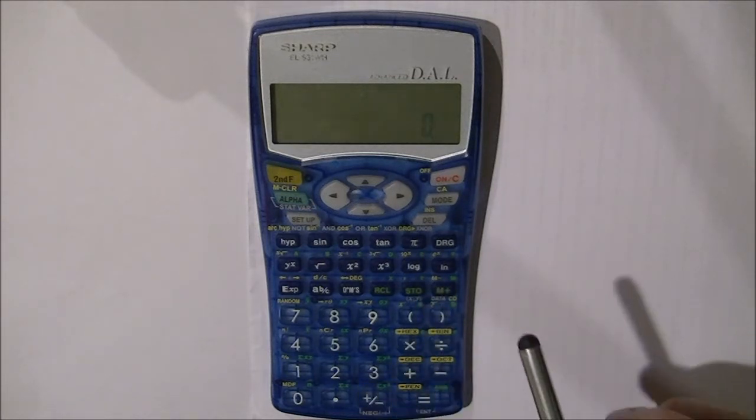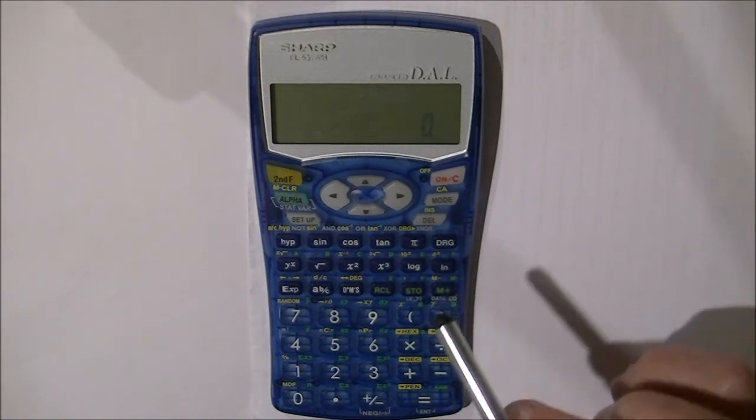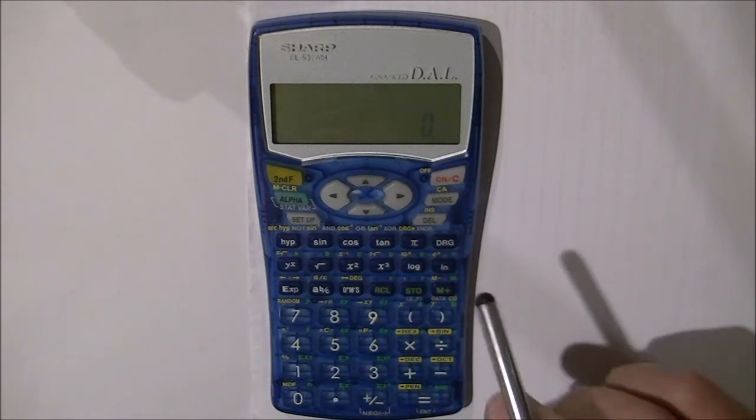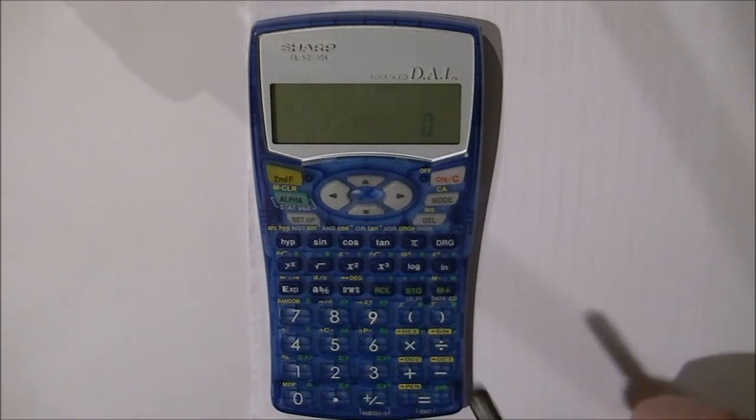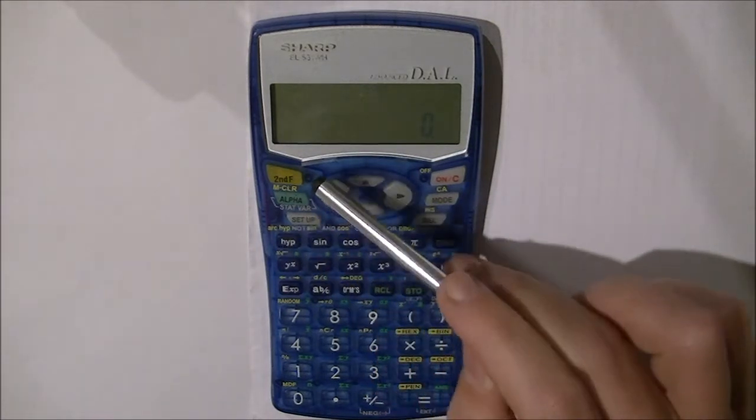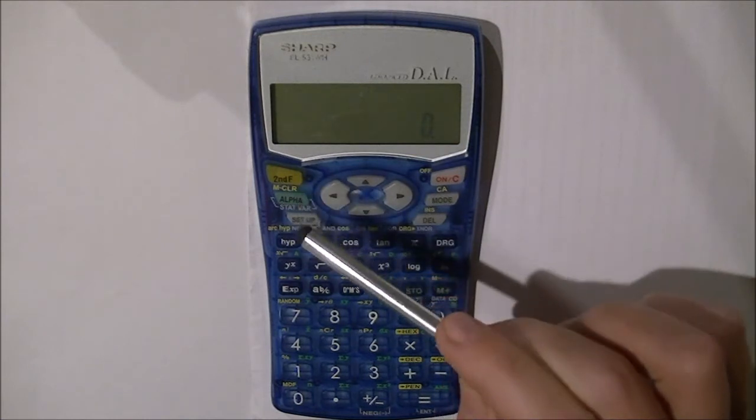The first thing that we're going to do is I'm going to show you how to clear the memory. Now this is very important because every time you do some work with statistics, you'll need to clear the memory so that those statistics from a previous question don't affect your next question. So the two buttons you'll need to be aware of are the second F and the alpha key to do this.